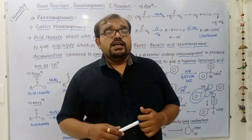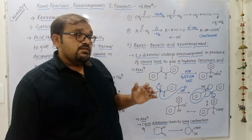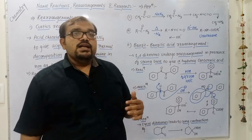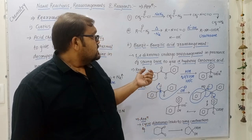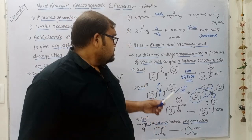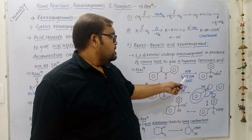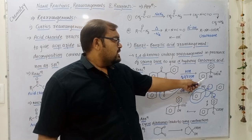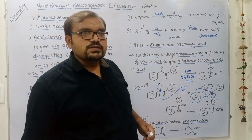The next important rearrangement is the benzilic acid rearrangement. It can be defined as: when a 1,2-diketone undergoes rearrangement in the presence of a strong base, it gives alpha-hydroxy carboxylic acid as product. In the reaction, when benzil is reacted with strong base potassium hydroxide (KOH) in water or ethanol as solvent at 100°C, we get alpha-hydroxy carboxylic acid or its salt as product.